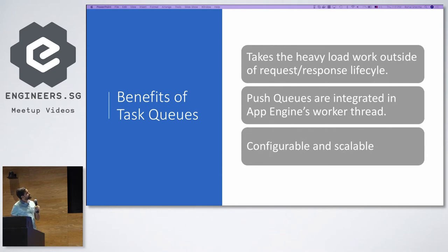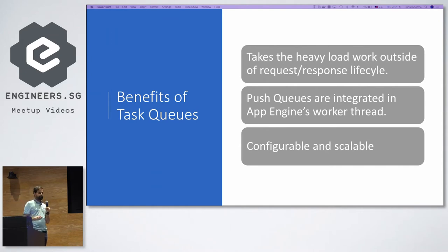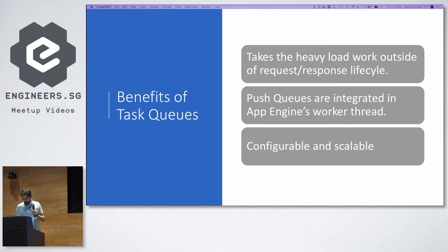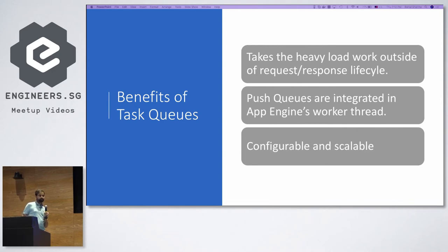The top three benefits of task queues: they offload all heavy-load work from your request-response lifecycle, so users don't have to wait. Push queues are integrated into App Engine's worker thread — you just specify the configuration and a path, and Google App Engine automatically takes care of it without paying for extra resources. It becomes part of your App Engine, and it's configurable and scalable.